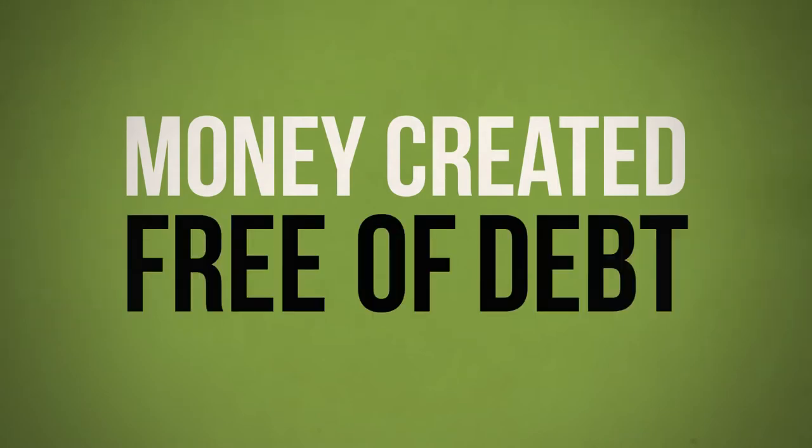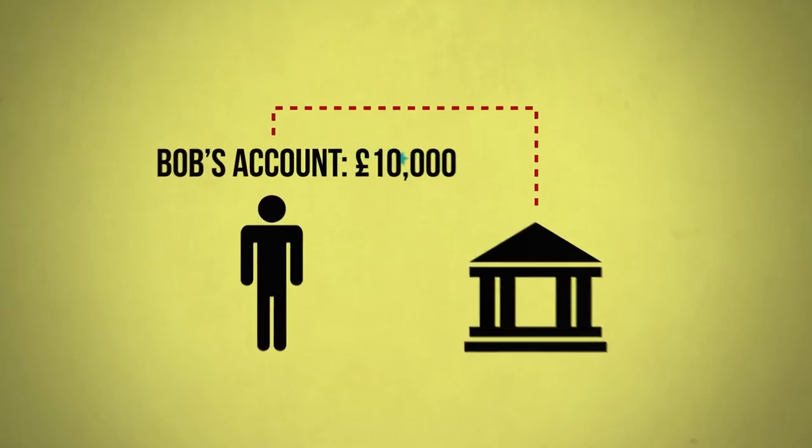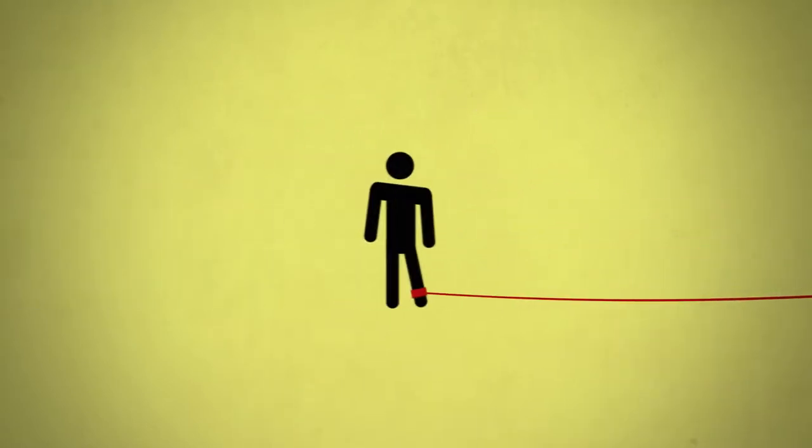Secondly, we want to see money created free of debt. Right now, banks create money when they make loans, which means that for every pound in your bank account, someone else must be a pound in debt.